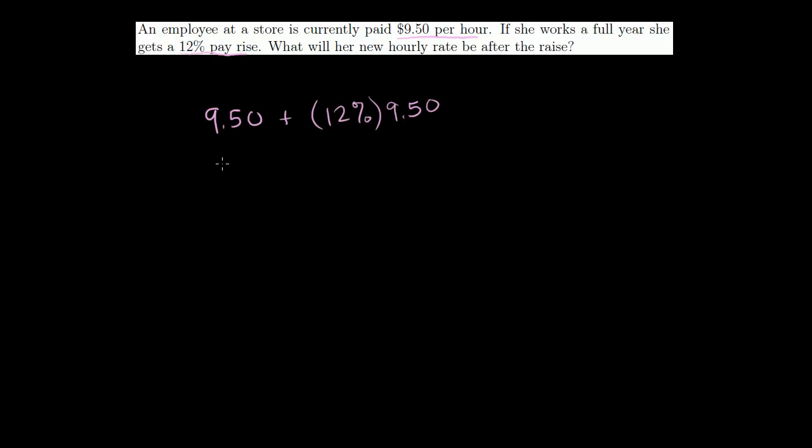Well, we could view it this way. This is the same thing as 9.50 plus 0.12 times 9.50. This is the same thing as 1 times 9.50 plus 0.12 times 9.50. So this is the same thing as 1.12 times 9.50. We are growing 9.50 by 12%. You already have the 9.50 plus another 12%. So 1.12 times 9.50 is going to equal our new number. Let me multiply this out.